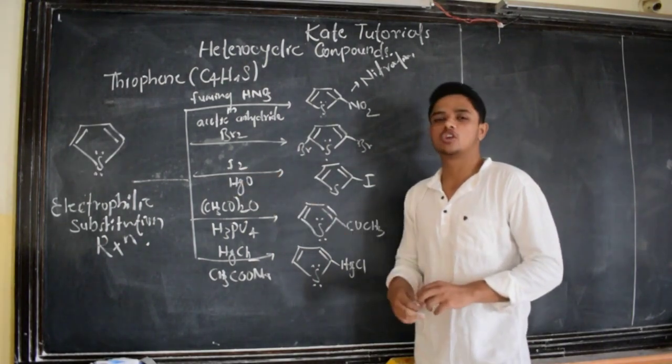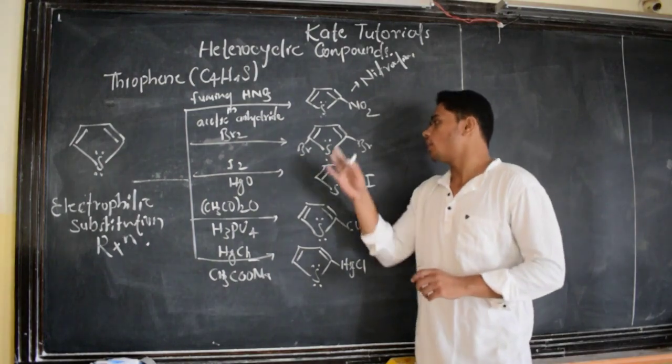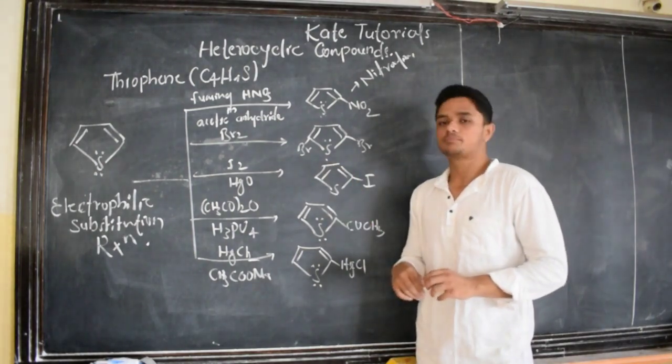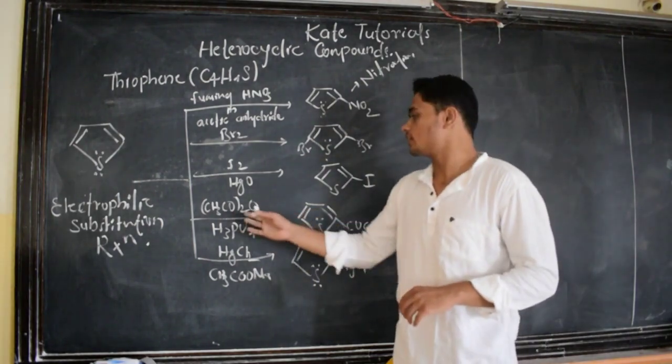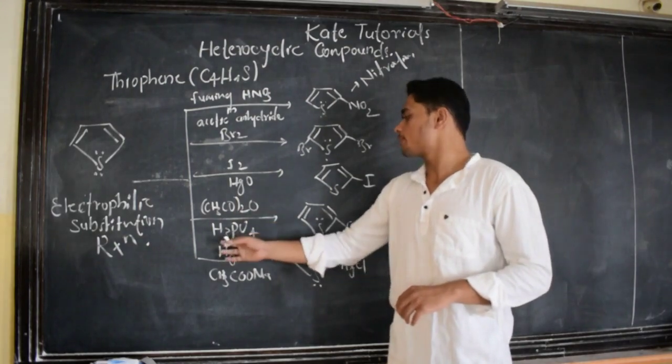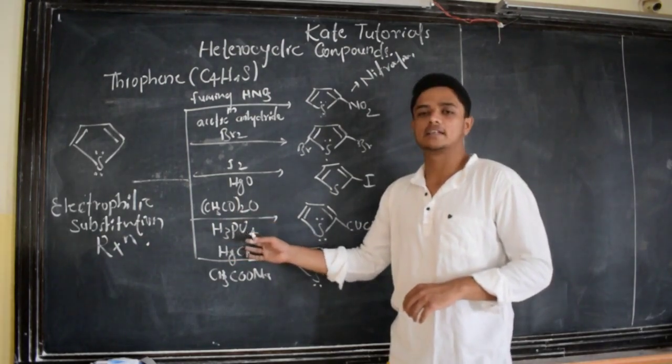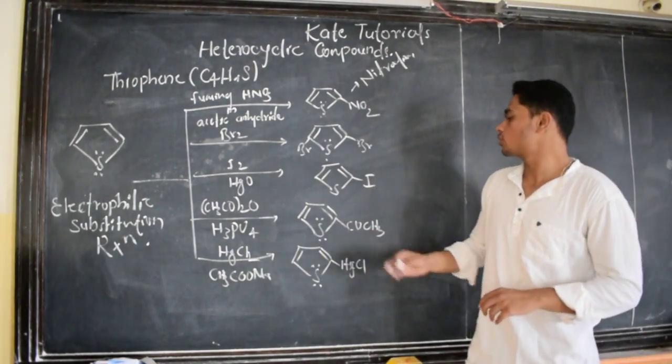I2 in presence of HNO3, we are going to get 2-iodothiophene. All these are good examples for electrophilic substitution. And also here, Friedel-Crafts acylation. The acyl group, that is CH3CO2O, this group in presence of phosphoric acid H3PO4, we are going to get this product.